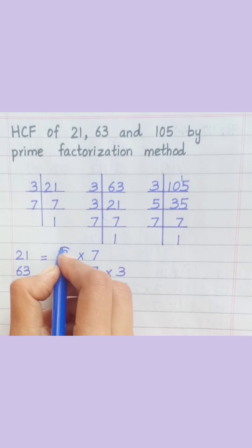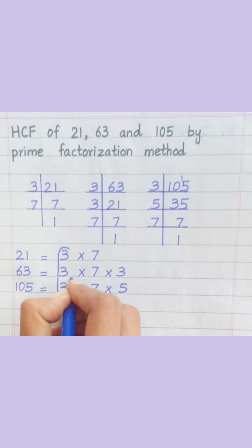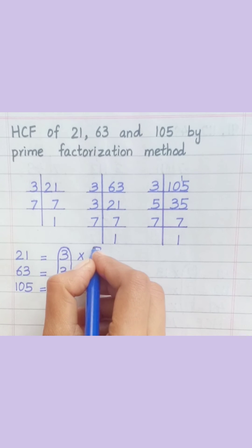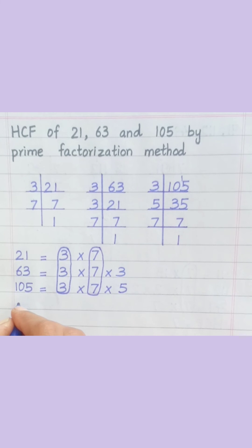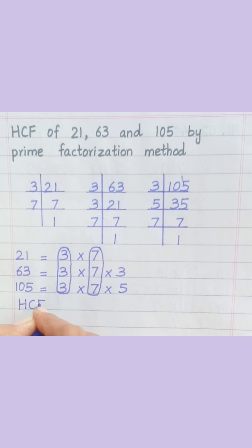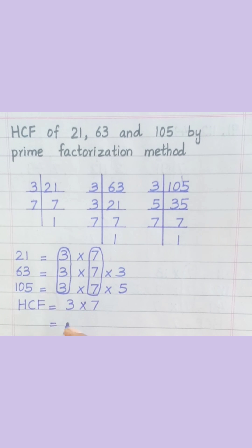Loop the factors that are common to all of the given numbers. HCF equals 3 multiply 7, equal 21.